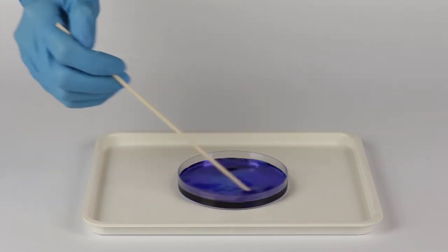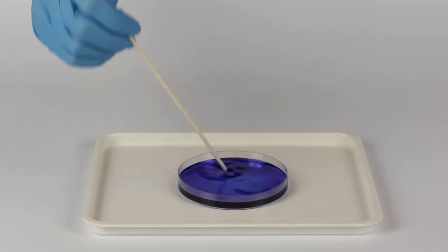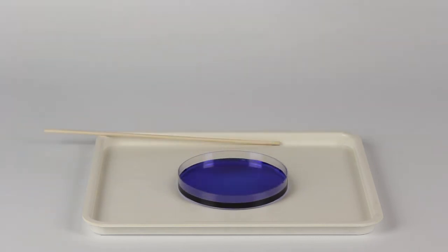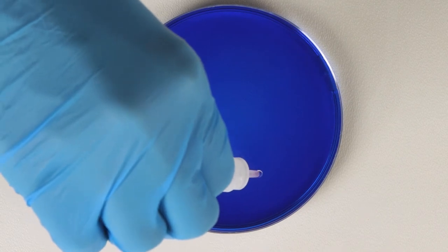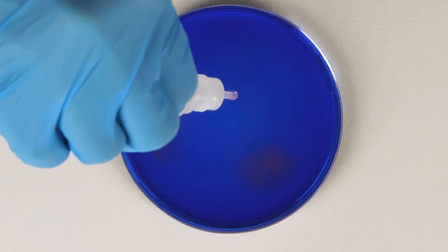Sodium carbonate solution is a basic medium in which thymol blue is naturally blue. Now add five to seven drops of sodium hydrogen sulfate to different places in the petri dish and stir the mixture gently.